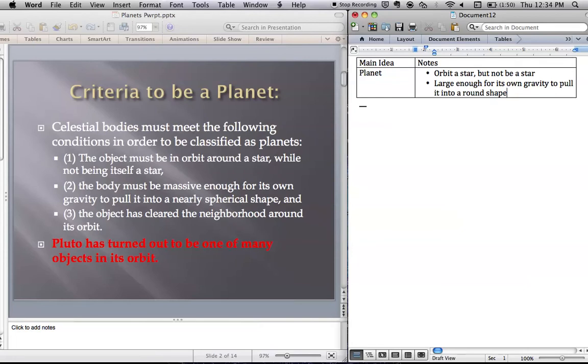So some asteroids that orbit the Sun aren't big enough to be pulled into a round shape. They kind of look like potatoes or other funky shapes. So they're not planets.